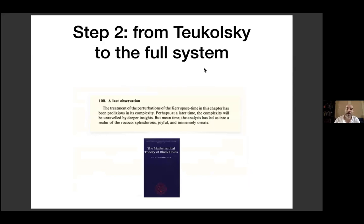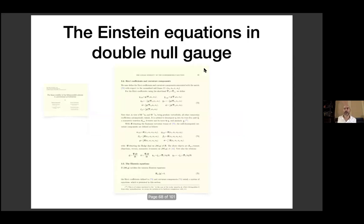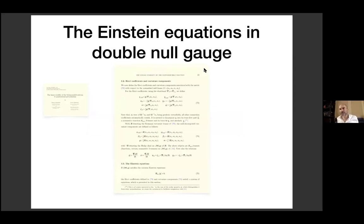Step two is much harder: going from the Teukolsky equation to the full linear system. This is a good time to give you Chandrasekhar's quote: 'The analysis has led us into a realm of the rococo — splendorous, joyful, and immensely ornate.' Let me tell you what double null gauge is. You foliate your spacetime by two families of null cones — outgoing null cones going to null infinity and ingoing null cones going to the event horizon. They intersect in spheres, and the equations are the structure equations of this foliation, given that your spacetime is Ricci-flat.